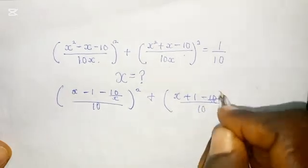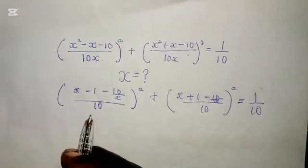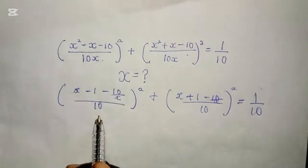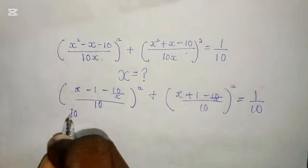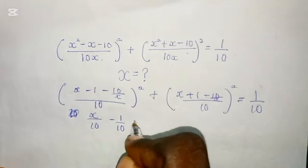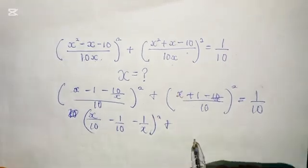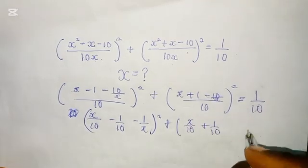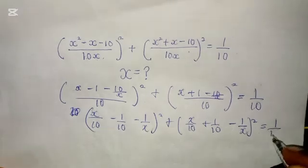So now we divide by 10 — everything here squared, everything here is equal to 1 over 10. We are going to divide the numerator by 10 and denominator by 10. So we have x over 10 minus 1 over 10, and here we have minus 1 over x, all to the power of 2. Do the same thing here: divide by 10, giving x over 10 plus 1 over 10, and here we have 1 over x, all to the power of 2. And everything here is equal to 1 over 10.